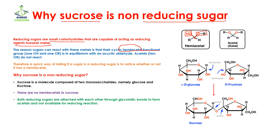Here you can see we have a glucose molecule. We have a carbon, and you can see that to this carbon one –OH group is attached and one –OR group is attached. Here, R means that any functional group can be attached. So because of this arrangement, the glucose molecule is a reducing sugar.